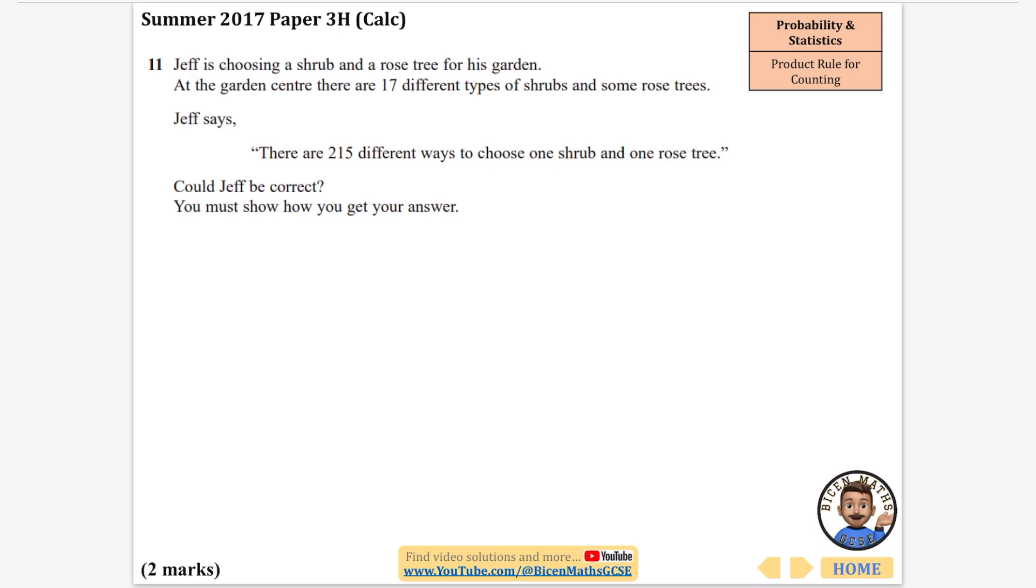So this first one says Jeff is choosing a shrub and a rose tree for his garden. At the garden center there are 17 different types of shrubs and some rose trees. In other words, I don't know how many rose trees there are. Jeff says there are 215 different ways to choose one shrub and one rose tree. Could Jeff be correct?